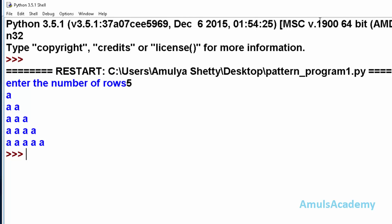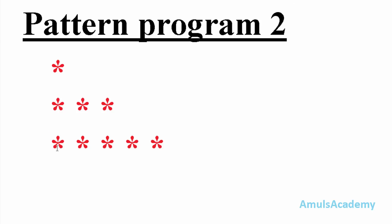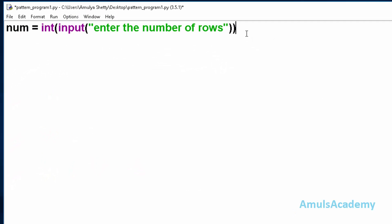Today we will discuss another pattern program where we want the output in this form: a single star in the first line, three stars in the second line, and five stars in the third line — that is, an odd number of stars in each column. The number of rows does not change, but the number of columns does. I will ask the user to enter the input first.